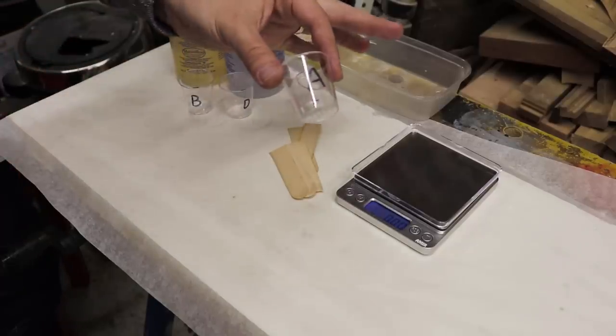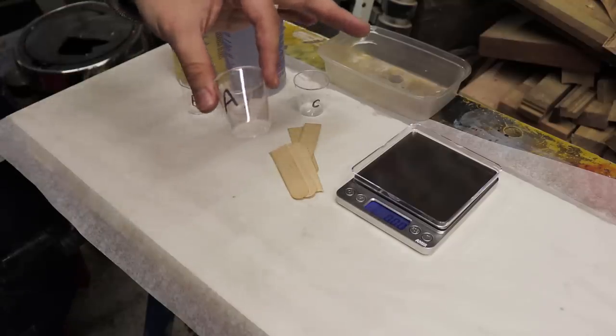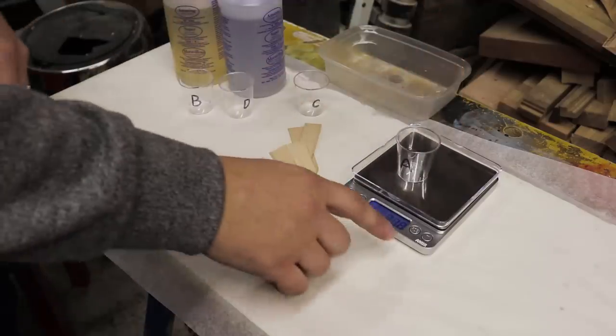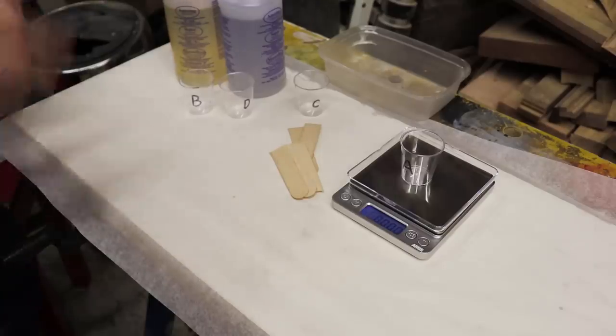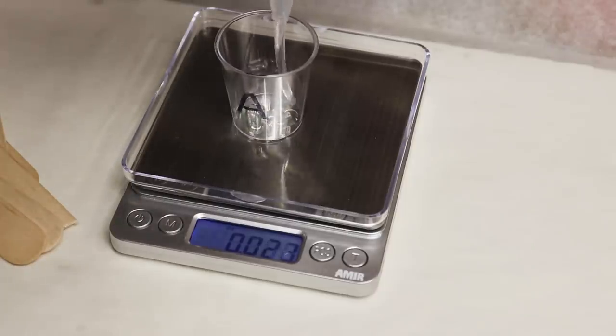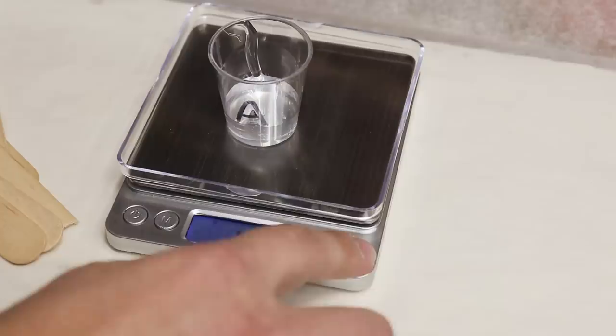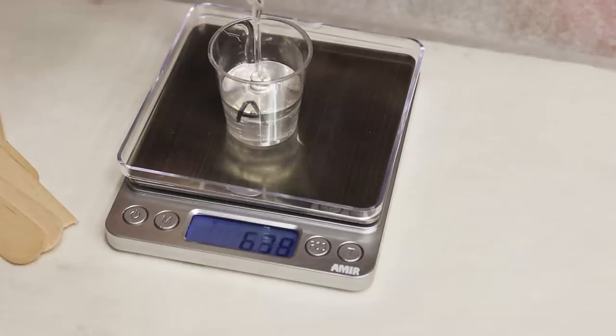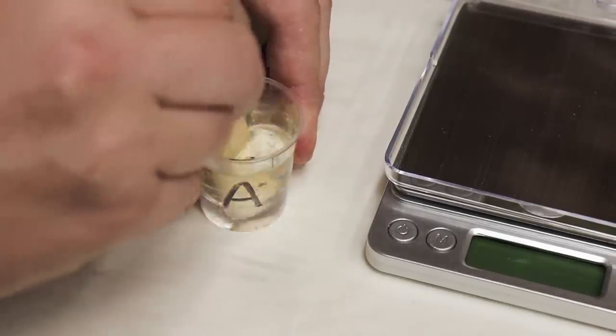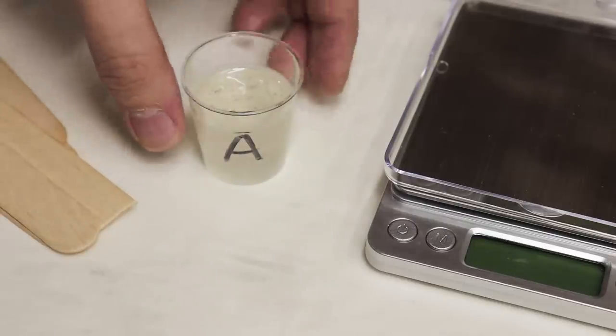Right then, trial A. As you can see I've marked all the containers with letters A, B, C and D so we can easily check out which one is which. First thing we need to do, turn on the scales, zero it and we're going to be pouring component A. Now we'll add component B which is the hardener. Let's give it a mix. And that is done, basic mixing. That's it for trial A.